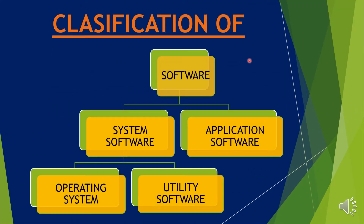Classification of Software: Software is of two types — System Software and Application Software.